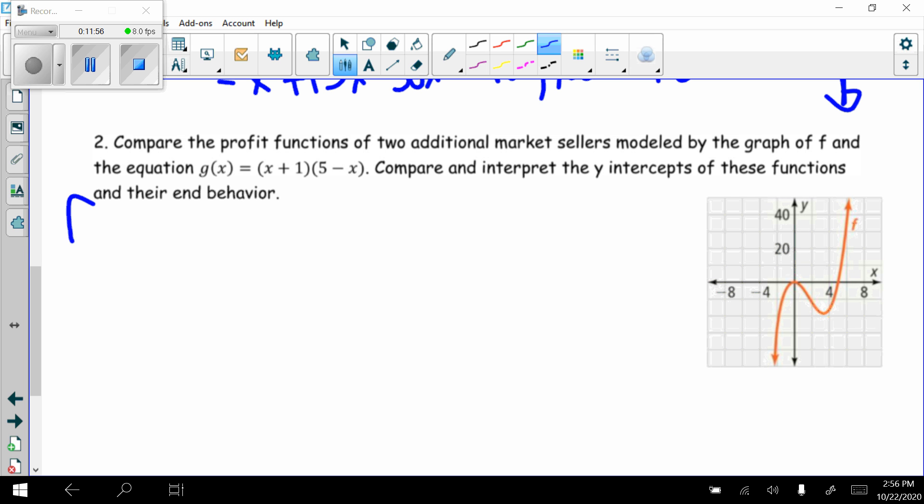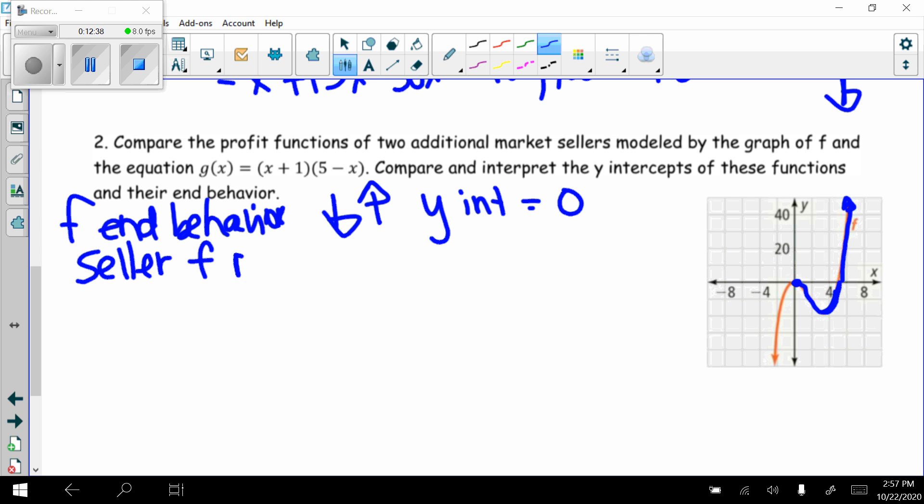We'll start with f. f's end behavior, we can see from the graph is down and up. Its y-intercept is 0. So if they sell nothing, they make nothing. But then look what happens on the graph. They sell between 0 and maybe around 5. They're losing money. After they sell 5, they start to make money.